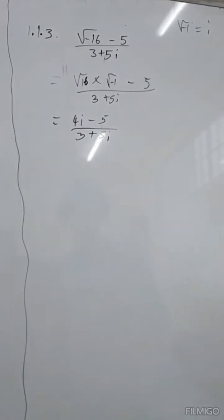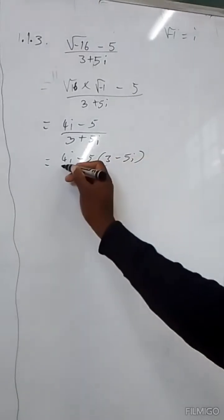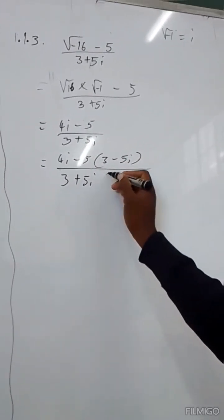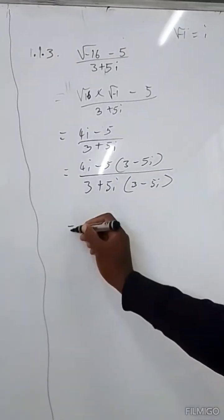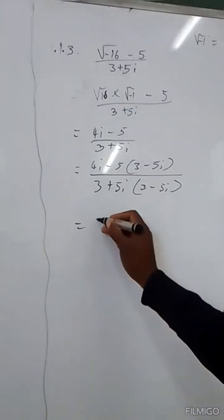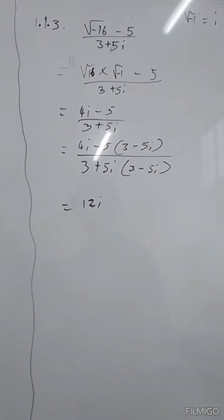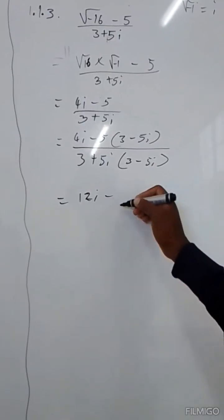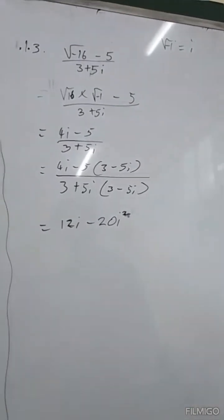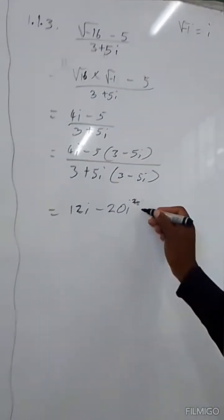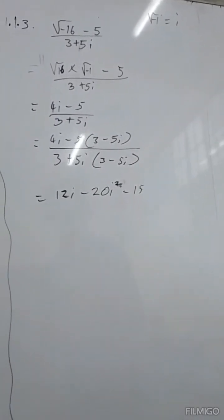So it will be equals to (4i minus 5) times (3 minus 5i), divided by (3 plus 5i) times (3 minus 5i). Expanding the numerator: 4i times 3 equals 12i; 4i times negative 5i equals negative 20i squared; negative 5 times 3 equals negative 15; negative 5 times negative 5i equals positive 25i.